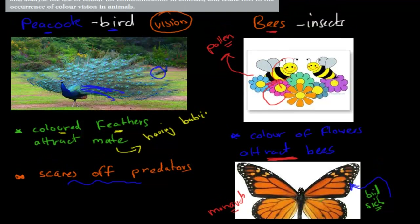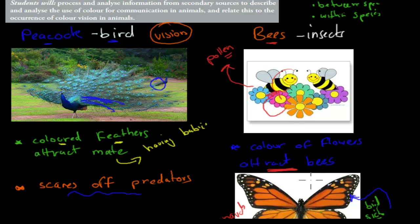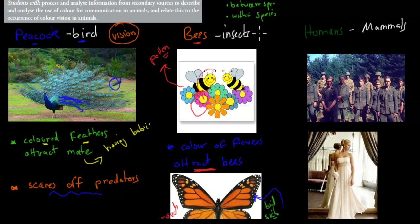Visual communication is used between species — such as between a bird and the monarch butterfly, which are two different species — but also within a species, such as between a male and female peacock. So communications are either within the species or between species, and both examples exist.